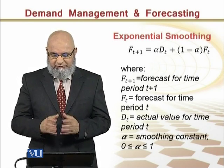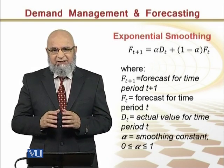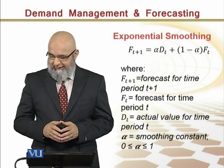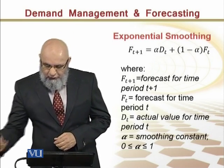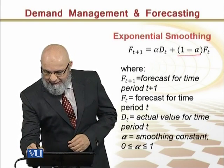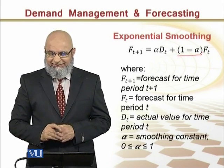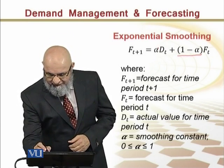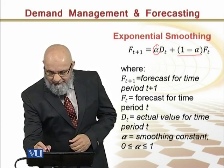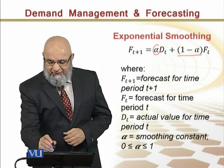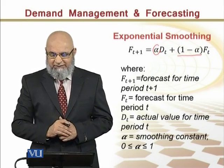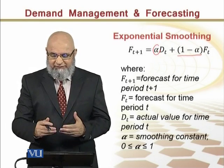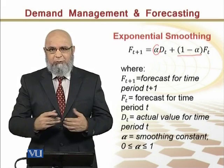If we look at alpha's value — if alpha equals 1, then the forecast component becomes 0, and the result is today's actual demand. So that means it becomes a naive forecast.